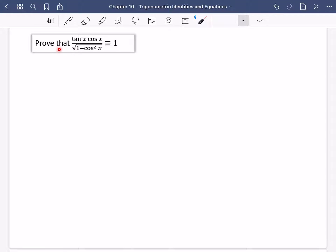Okay, so we're going to try and prove that tan x cos x over the square root of 1 minus cos squared x is always equal to 1.